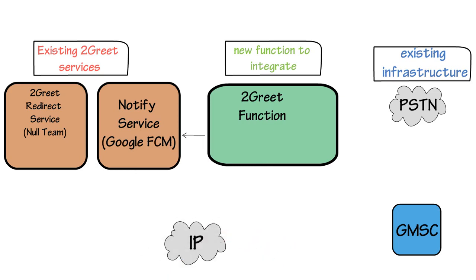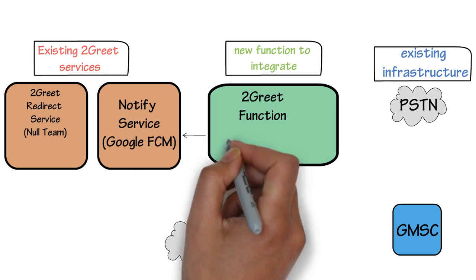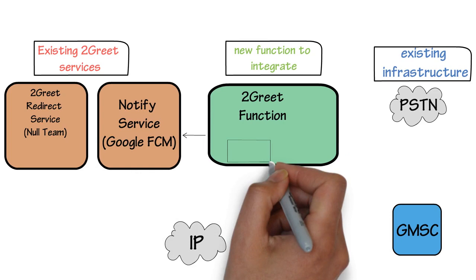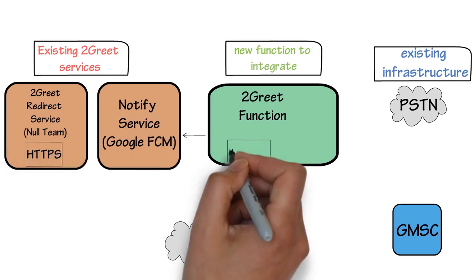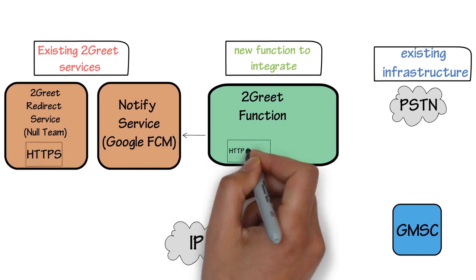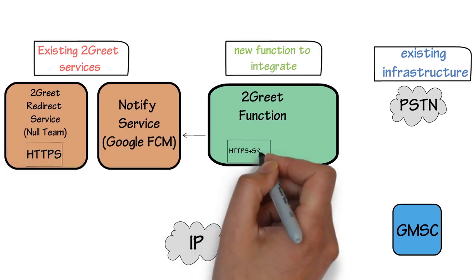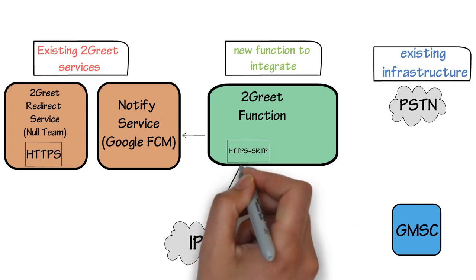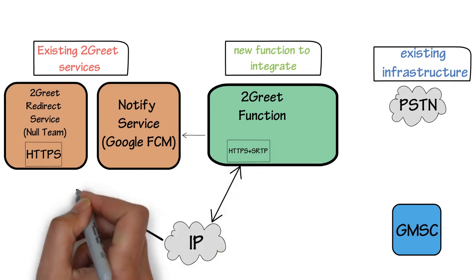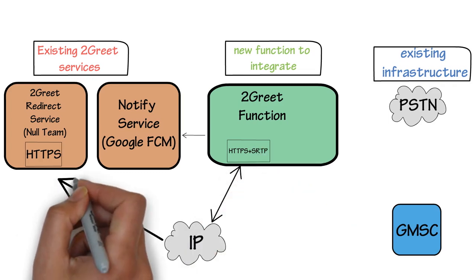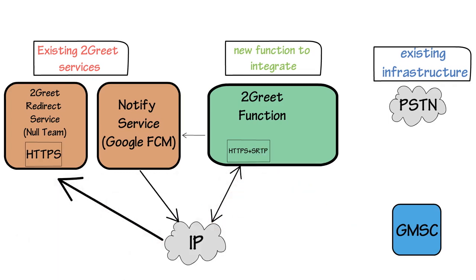On the Internet side, the function exposes a secure HTTPS web service and SRTP endpoint. It only needs a public IP address and a TLS certificate, possibly from the Let's Encrypt initiative.